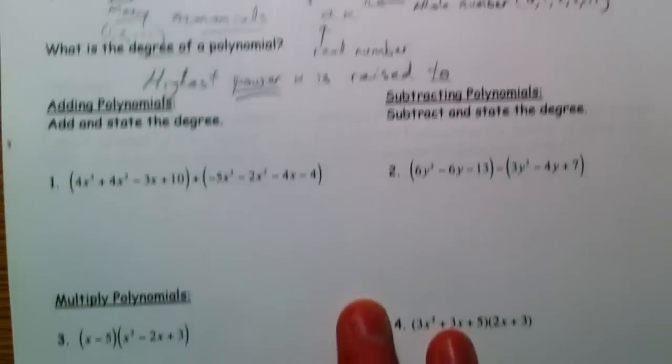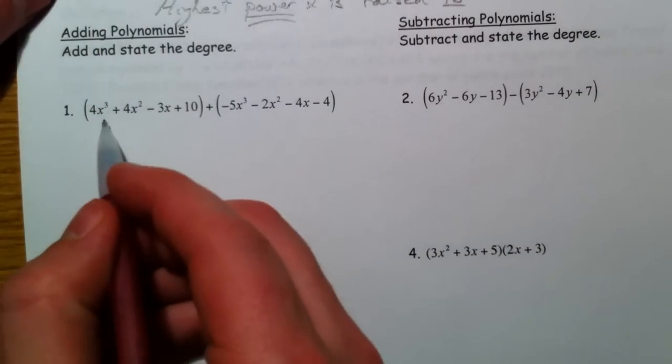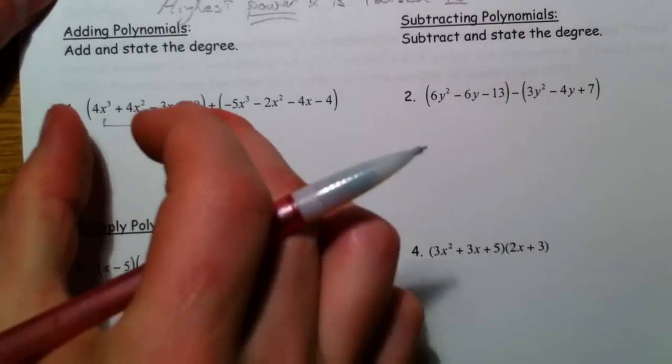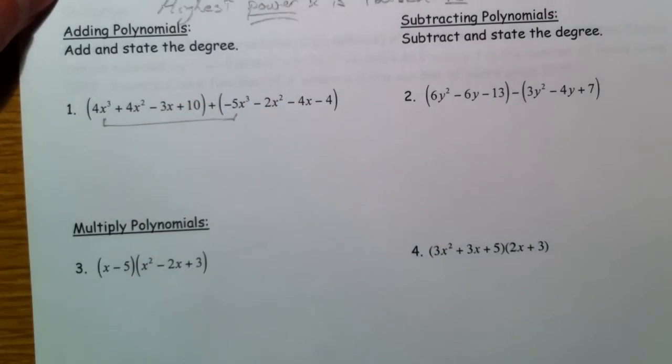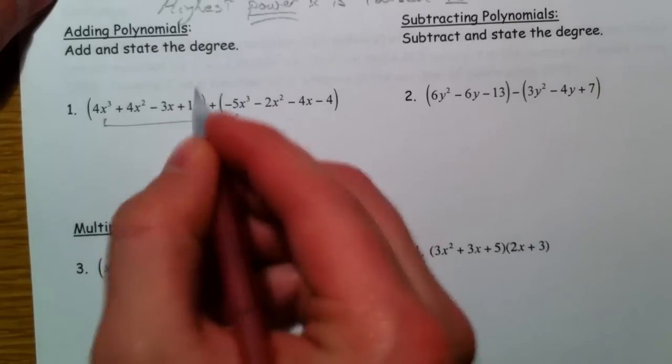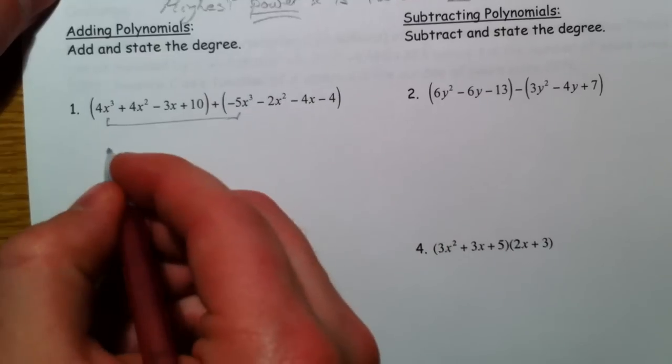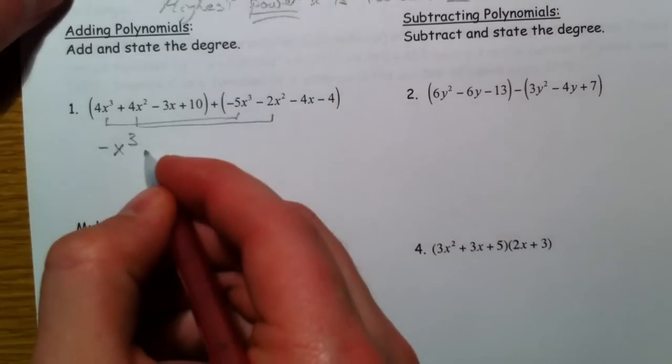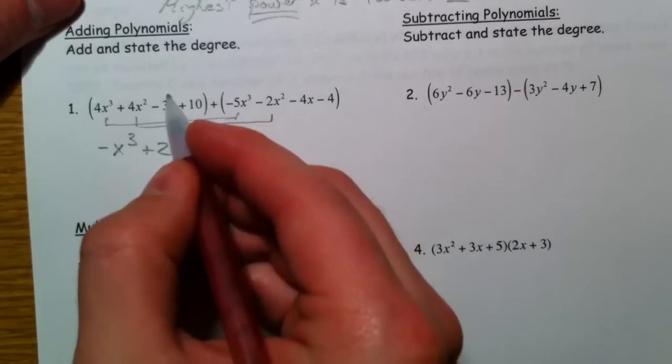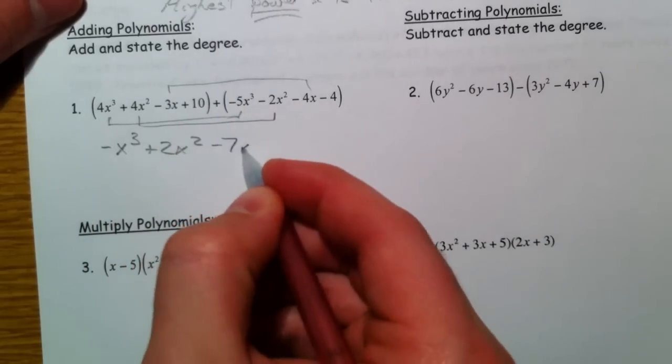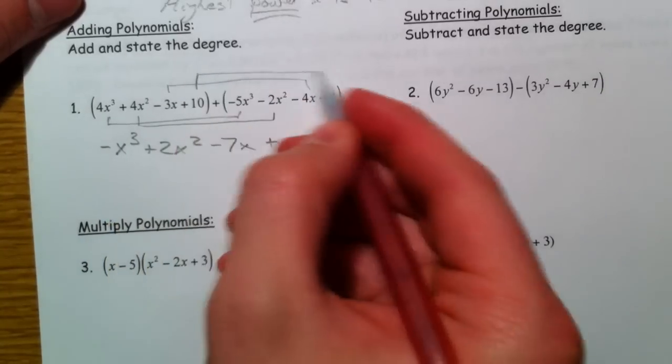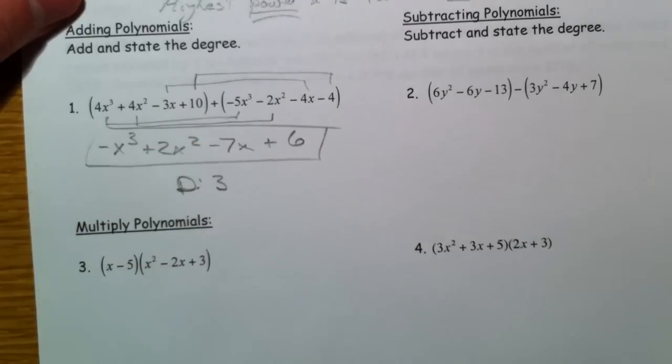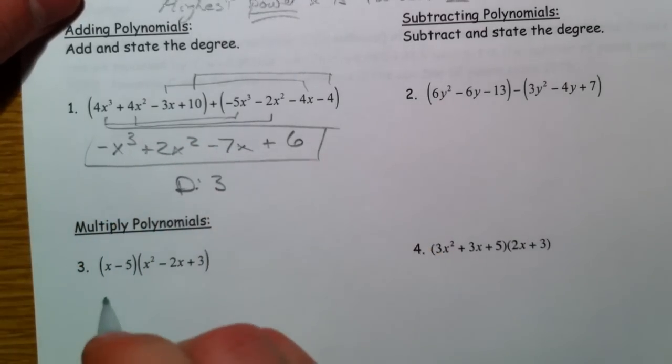All right. So let's add these polynomials. All we're doing is combining like terms. Now, these parentheses sometimes confuse people. But we're just adding this to this. Don't be wanting to distribute just because. Don't be wanting to foil it out and do all that. So 4x cubed minus 5x cubed is negative x cubed. 4x squared minus 2x squared is plus 2x squared. Negative 3x minus 4x is negative 7x. And 10 minus 4 makes 6. Degree, 3. Highest power x is raised to. And we typically write them in decreasing order of powers.